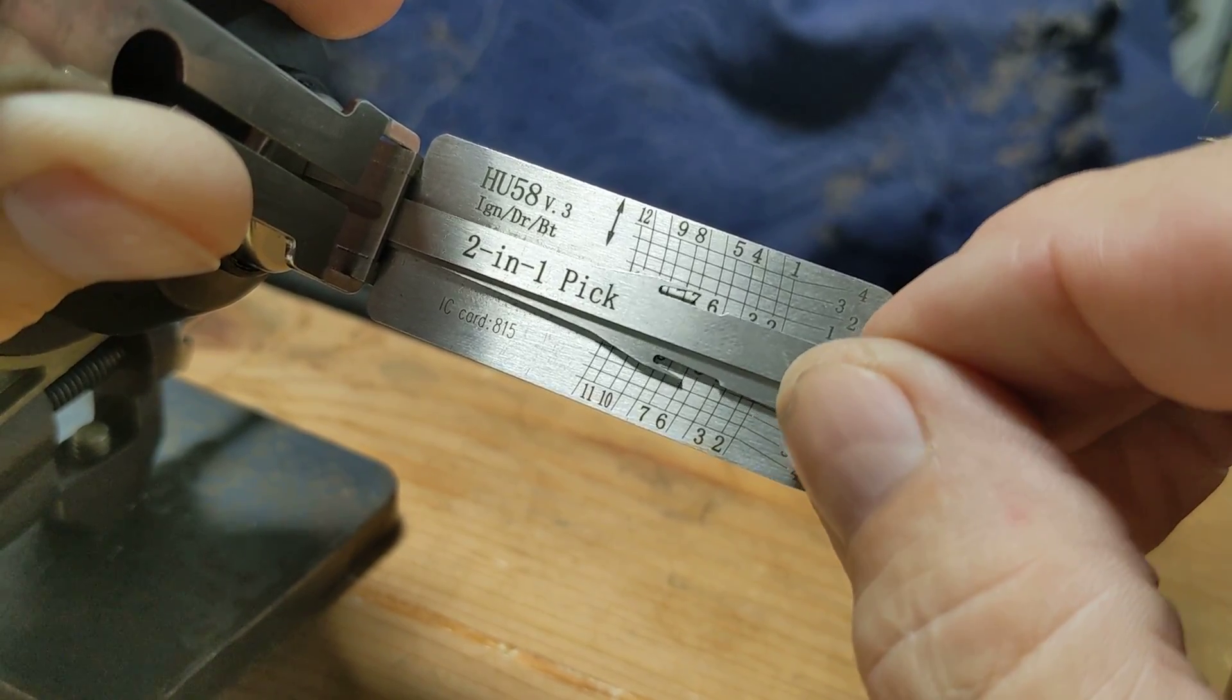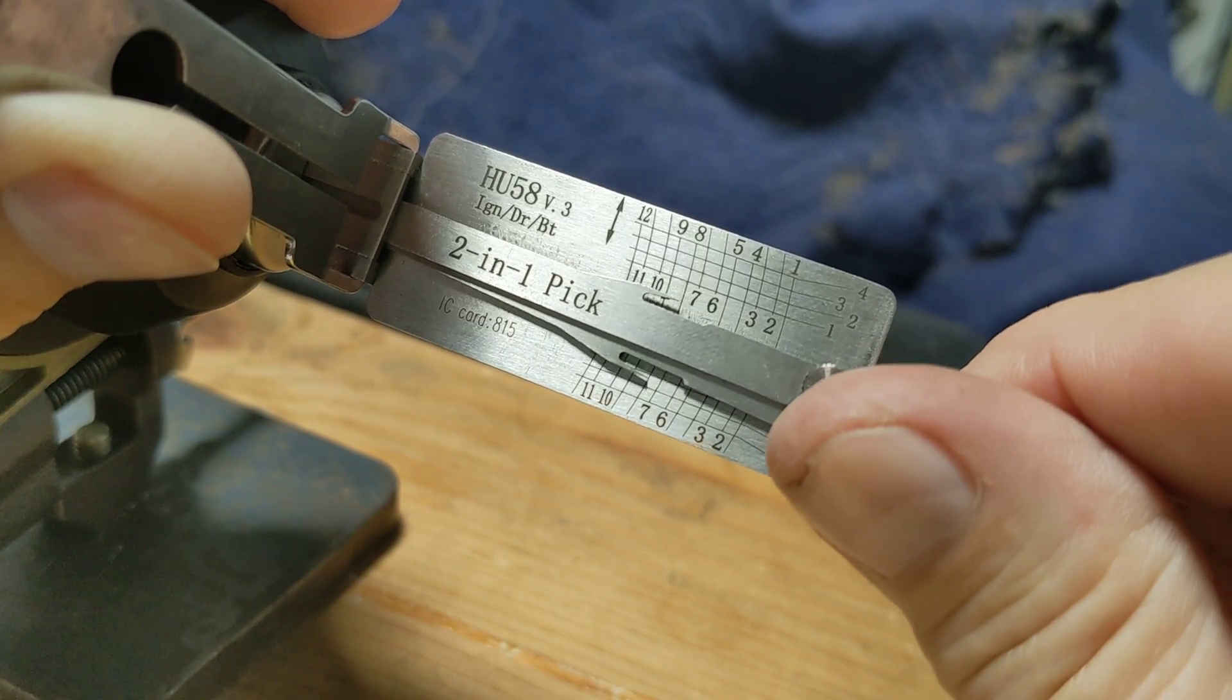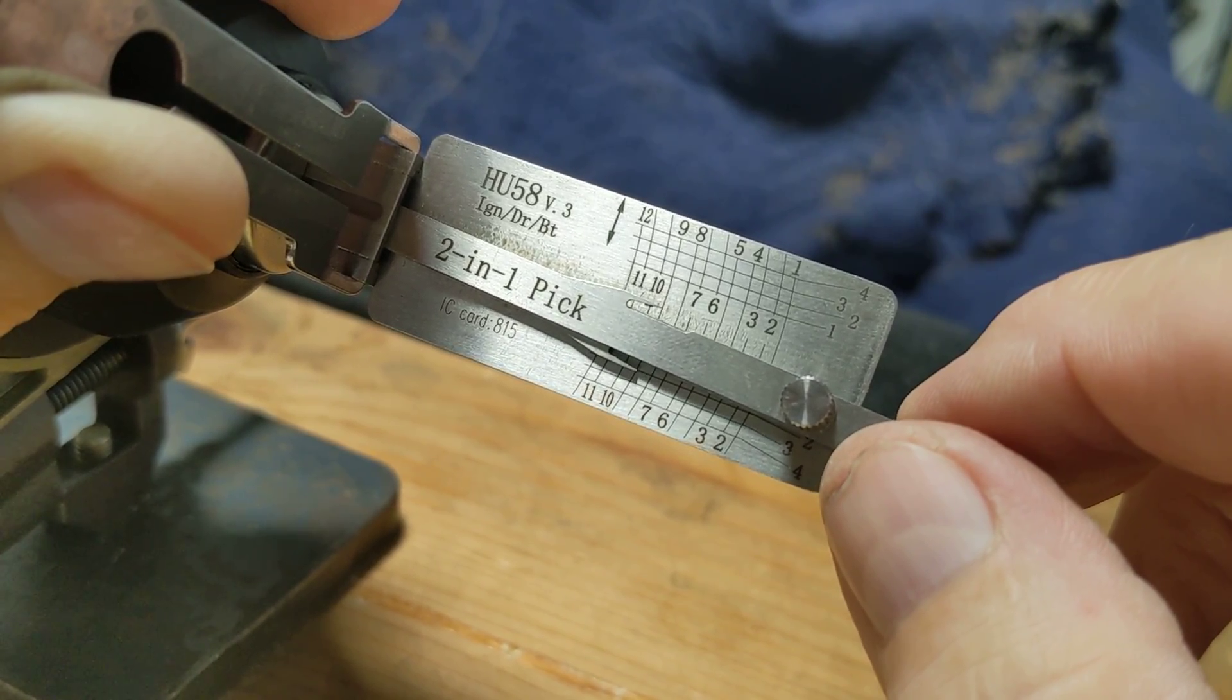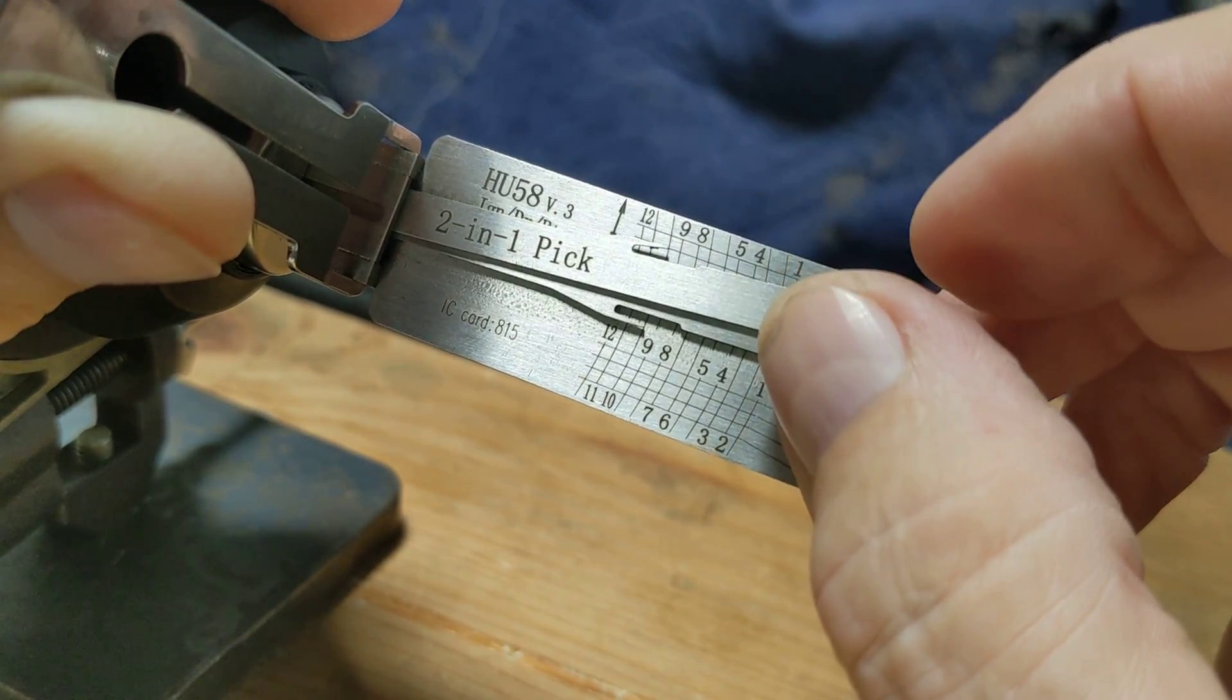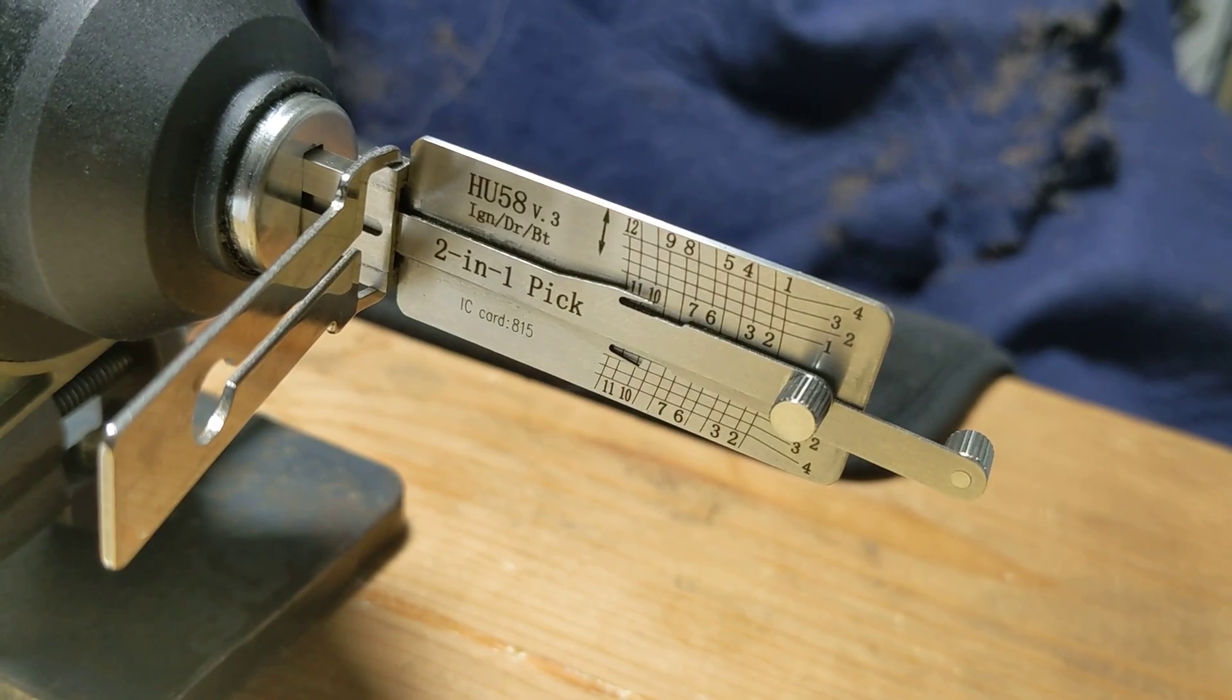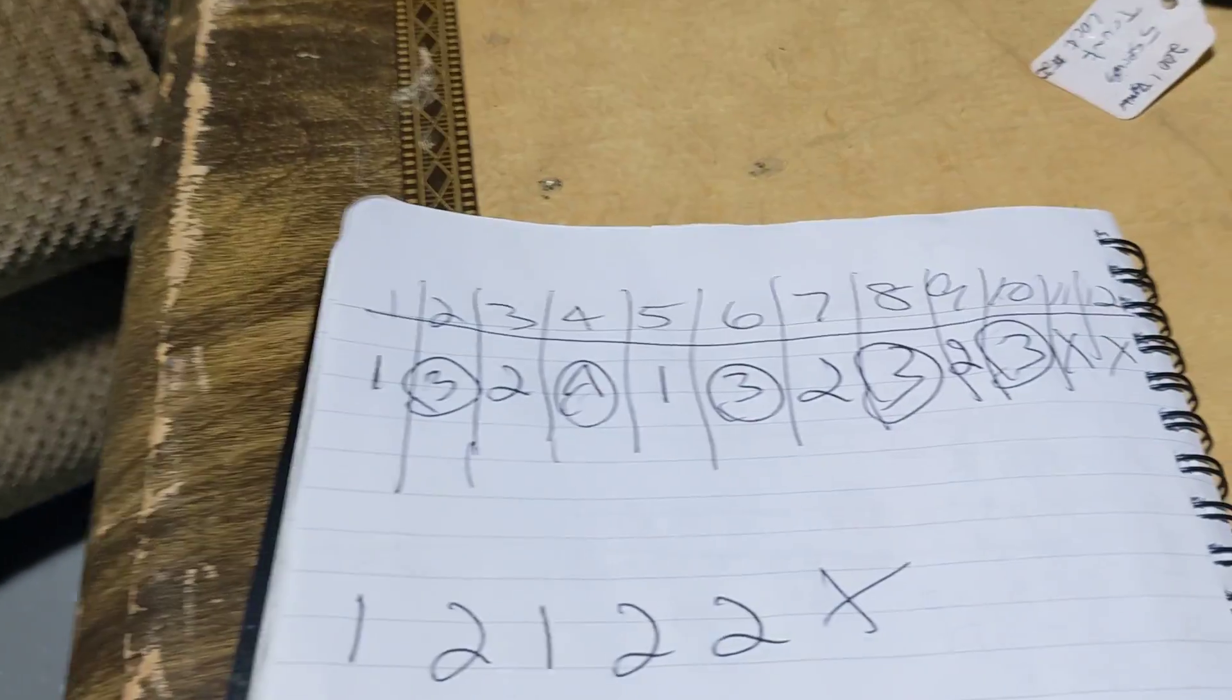Six is a three, seven is a two. Eight's three. Nine's a two, nine's a two, ten's a three. All right, so I write them down exactly as I read them, okay.